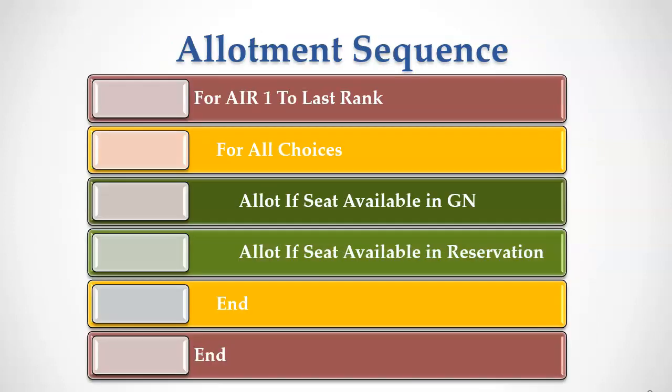It will pick the topmost candidate first — say All India rank 1 — and check all choices mentioned by that candidate. If there are seats available in the first choice of the candidate, it allots the seat. If not, it checks if there is any seat under the reservation category if the candidate belongs to any reservation category. If not, it moves to the next college preference till the complete choice list is exhausted.